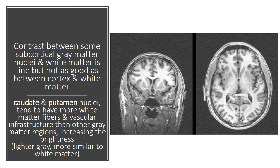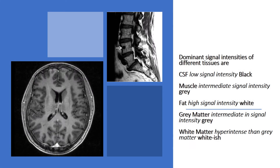The caudate and putamen nuclei tend to have more white matter fibers and vascular infrastructure than other gray matter regions, increasing the brightness — appearing lighter gray — more similar to white matter. The dominant signal intensities of different tissues are: CSF gives a low signal intensity and is black; muscle is of intermediate signal intensity or gray; fat gives a high signal intensity and is white; gray matter of the brain is intermediate in signal intensity or gray.